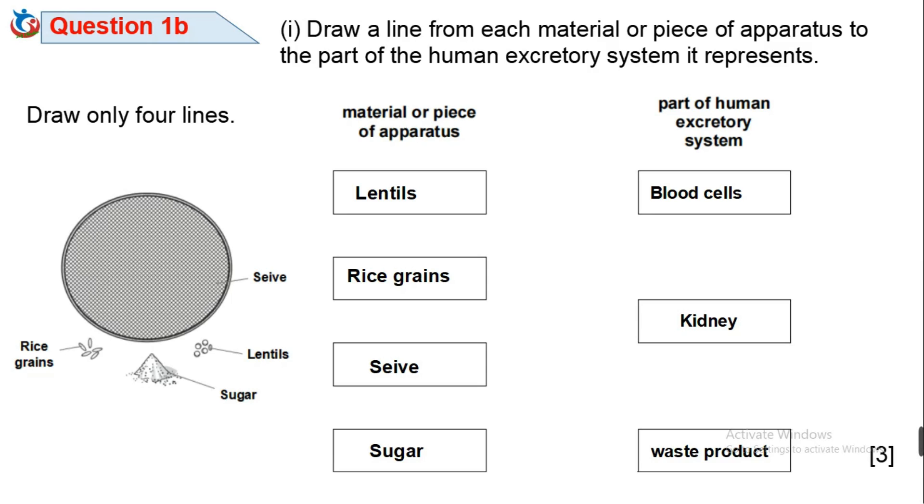Now back to the experiment and diagram. Rice grains, lentils and sugar are added to a beaker of water. Sugar will dissolve because it's soluble. Lentils which are edible legumes and rice grains will not dissolve.